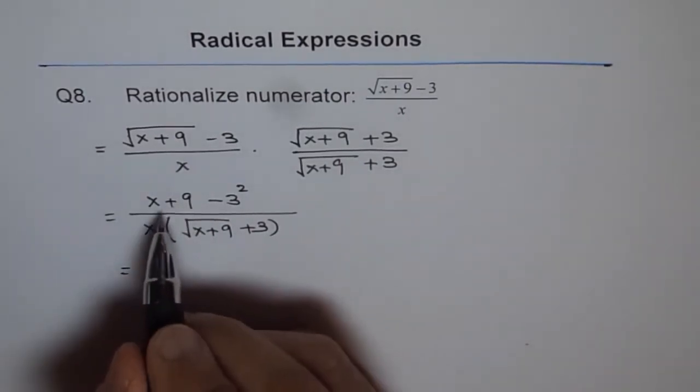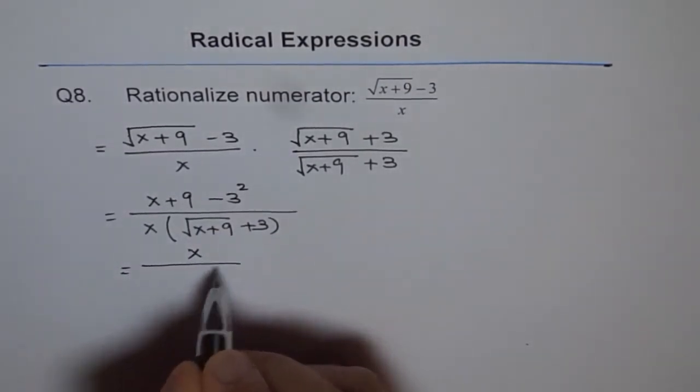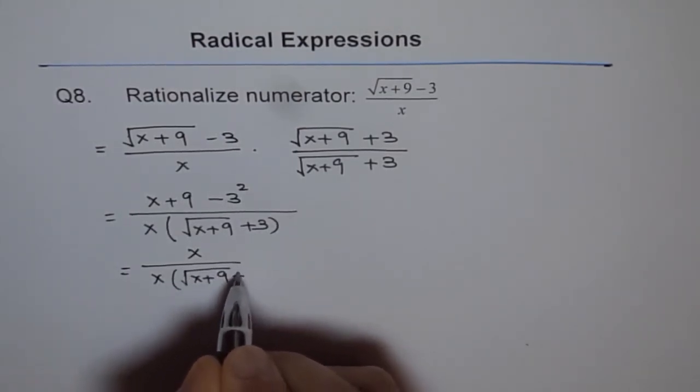Here x plus 9 and minus 3 square is also 9, so we get x over x times square root of x plus 9 plus 3.